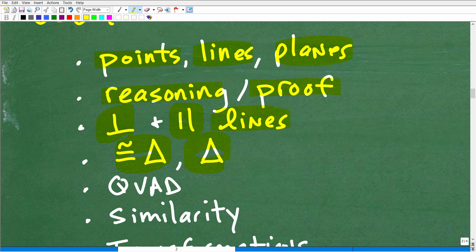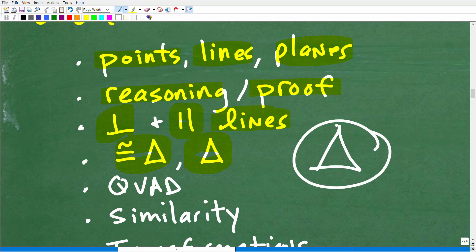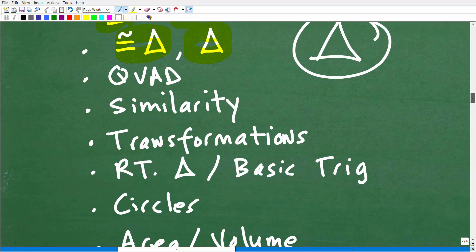Another thing is perpendicular and parallel lines. All the properties and theorems and postulates there, transversals, alternate interior angles, all this stuff. Again, if you don't know what I'm talking about, you will learn this. Or if you want to learn it, you can take my course or another course. But again, this is what you're going to have to learn in high school level geometry. Then you have congruent triangles and a lot about triangles in geometry. A triangle is just one shape, but triangles are extremely important. You're going to learn a lot about the properties of triangles, congruent triangles, similar triangles.